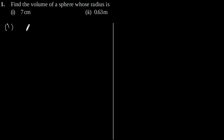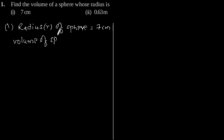So solving for the first part, radius r of a sphere is equal to 7 cm. Using the formula of volume of a sphere which is 4/3 π r³,